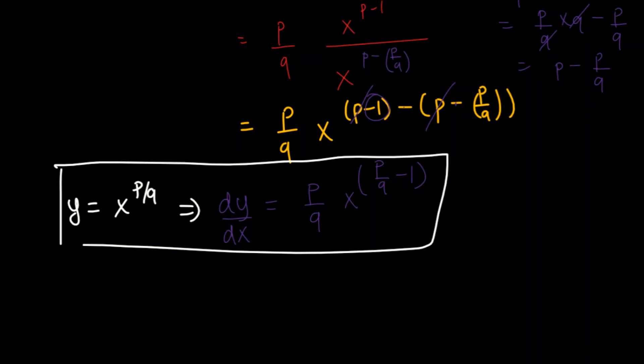This simply extends our definition of the power rule from just positive integers to a wide set of numbers — rational numbers. It's possible the derivative may not be defined across the entire domain, just as we saw with the derivative of 1 over x. We will look at how to use these derivatives in future videos. See you in the next one.